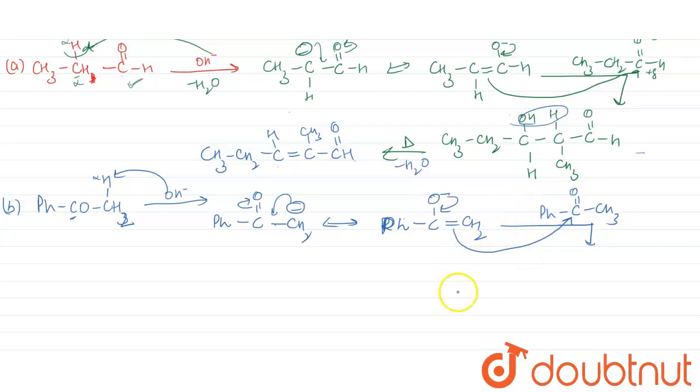So what will it form? It will form Ph-C-O-H, O was negative over here, OH positive it gets from the solution, CH3 and here CH2 and then we have C double bond O and then we have Ph.